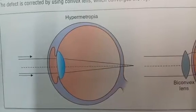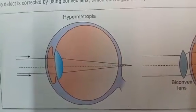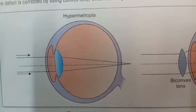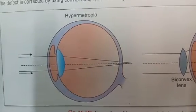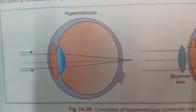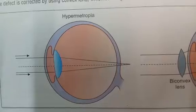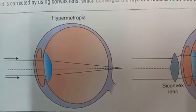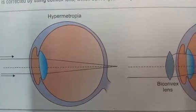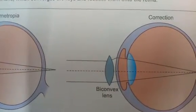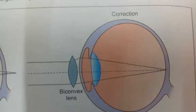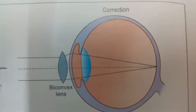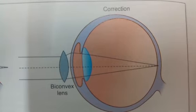Distant objects can be seen clearly, which is why hypermetropia is called long sight. From the figure, we can easily understand hypermetropia — in this case, rays focus behind the retina. This defect is corrected by using spectacles with a bi-convex lens, so that the image is correctly focused on the retina.